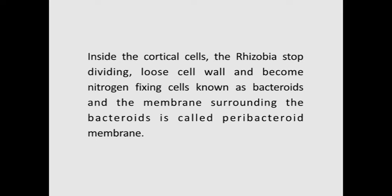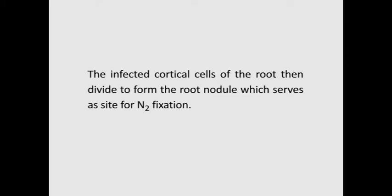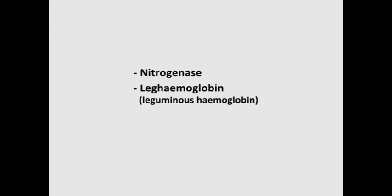Inside cortical cells, rhizobia stop dividing, lose their cell wall, and become nitrogen-fixing cells known as bacteroids. The membrane surrounding the bacteroids is called the peribacteroid membrane. The infected cortical cells then divide to form the root nodule, which serves as the site for nitrogen fixation. The mechanism of nitrogen fixation by bacteroids is carried out with the help of an enzyme complex consisting of the nitrogen-fixing enzyme nitrogenase and an oxygen scavenger called leghemoglobin.